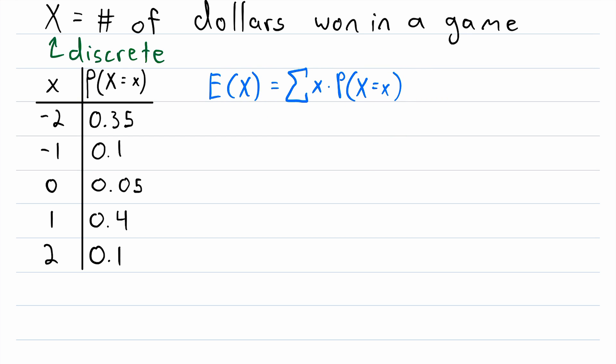And if we wanted to be a bit more particular with this notation, under the sigma, we can write that x is an element of s, where s is the sample space, which means that it's the set of all possible values that the random variable can take on.